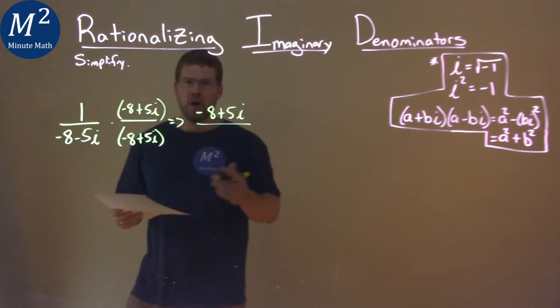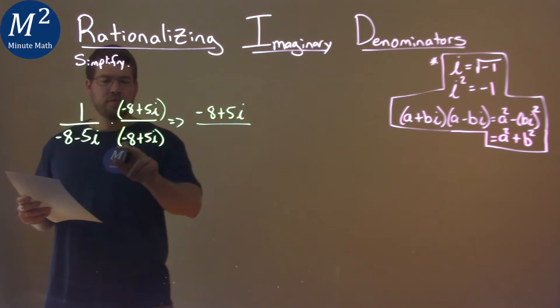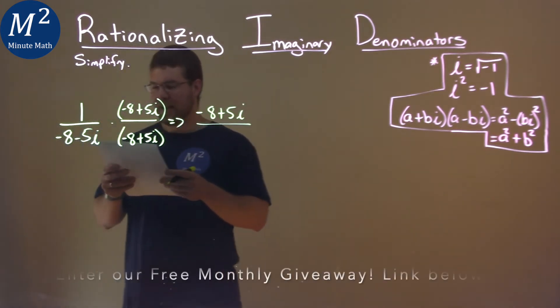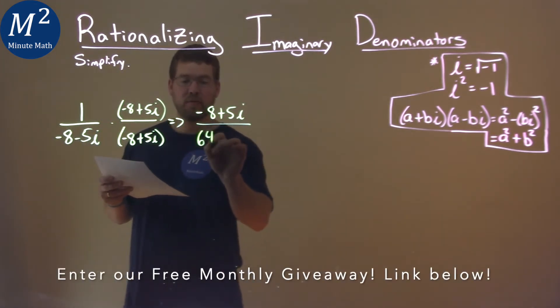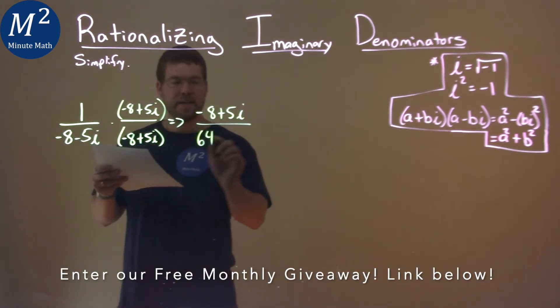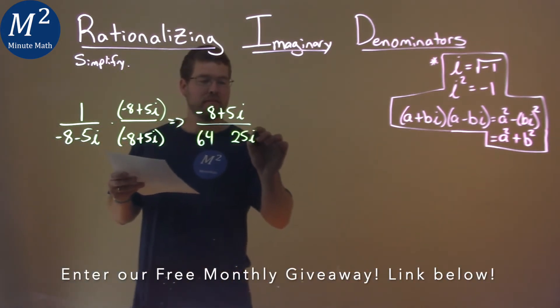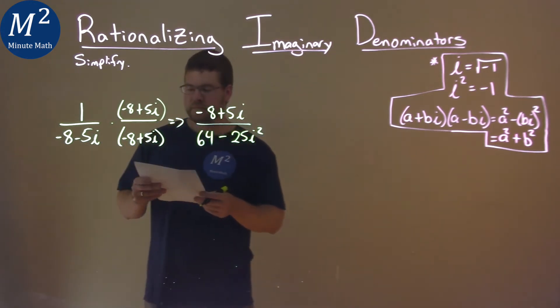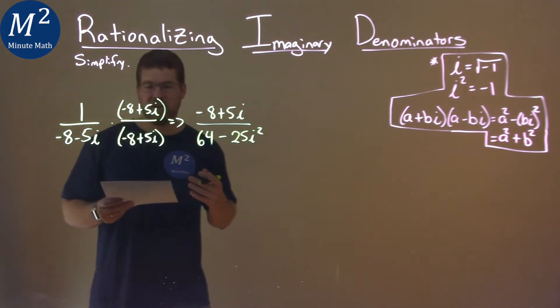Denominator, though, our rules state that we just multiply the first two numbers, so negative 8 times negative 8 is positive 64, and the last two numbers, 5i times 5i is 25i squared, and we keep that in minus. The other parts will just cancel out.